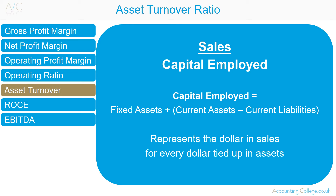Asset turnover is sales divided by capital employed. Capital employed represents the capital investment necessary for a business to function. Capital employed is calculated as fixed assets plus current assets minus current liabilities. The asset turnover ratio represents the dollar in sales for every dollar tied up in assets. It measures how efficient an organisation is at using its assets to generate sales. The higher the ratio, the more efficient the organisation.